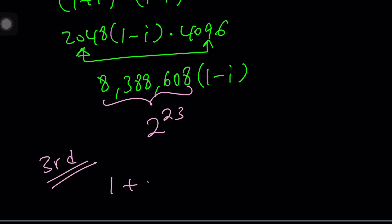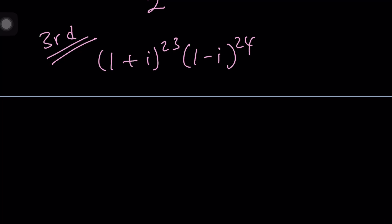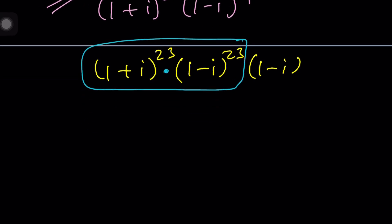For my third method, I'm going to take this to the 23rd and this to the 24th. One thing to keep in mind is 23 and 24 are pretty close. So we can kind of do this: separate one of the (1 - i)'s so we can get the same power, and then bundle these together. When you multiply two exponentials with the same exponent, you can basically multiply the bases. So this turns into (1 + i) times (1 - i), and then the whole thing is raised to the power 23, and that's just multiplied by (1 - i).